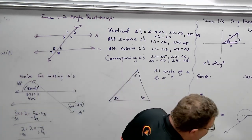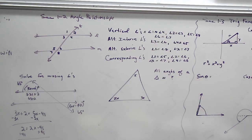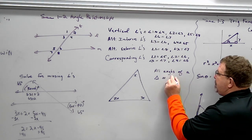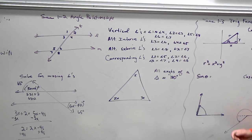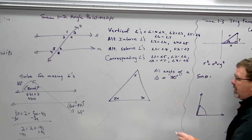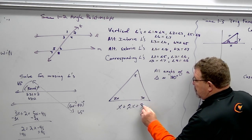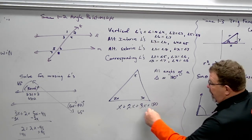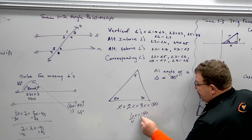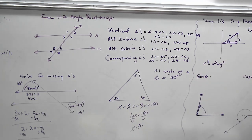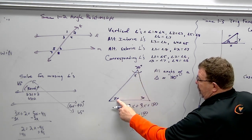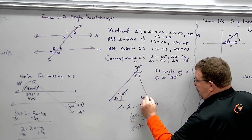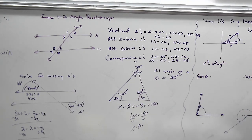Moving on to triangles — first, what do all the angles of a triangle add up to? 180, every single time. By knowing that, I can find missing angles. All angles have to add up to 180: so 6x equals 180. Divide by 6: x equals 30. That angle is 30 degrees, this one is 2 times 30 which is 60, and the third is 90. These angle relationships pop up from time to time in trig.